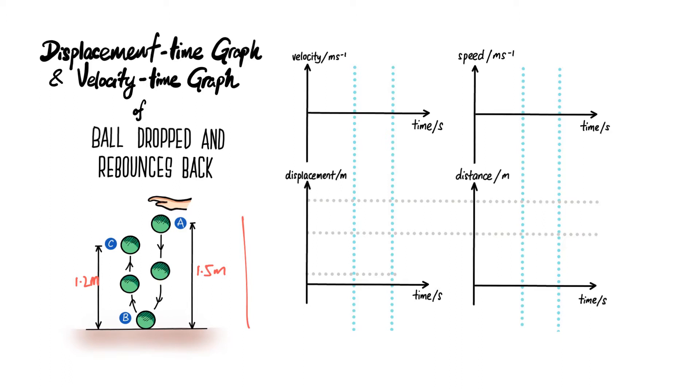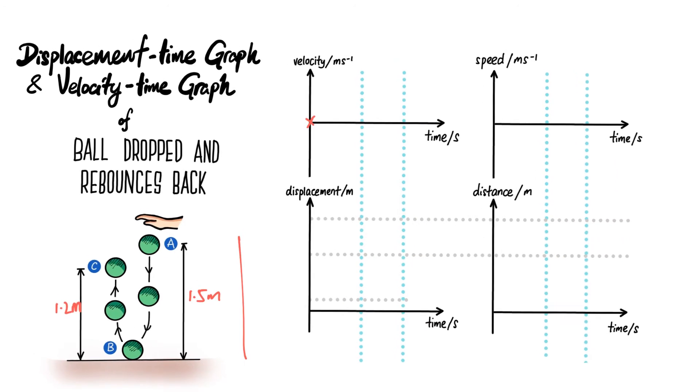Now let's take a look at the velocity-time graph. At time equals zero, the velocity is zero, and as you release the ball it will undergo constant acceleration, so it will be a constant gradient until this point just before it reaches the floor where the speed is maximum. Then, because the ball is being squashed when it hits the floor, there will be a sudden deceleration, then after that it will rebound back.